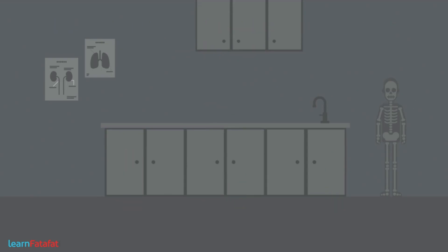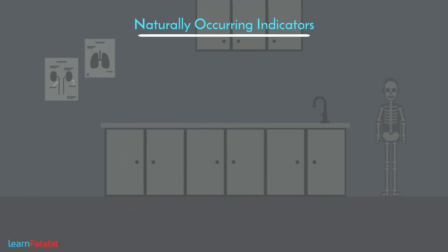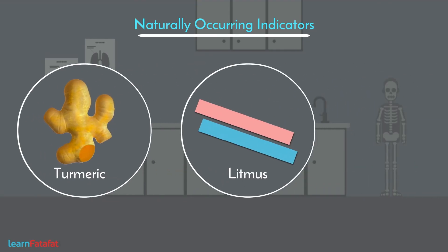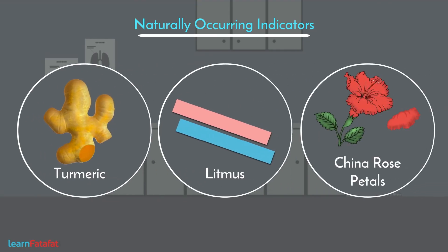Some of the naturally occurring indicators are turmeric, litmus, petals of china rose — which is also called hibiscus — etc.